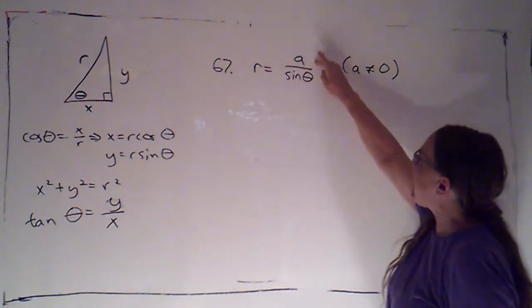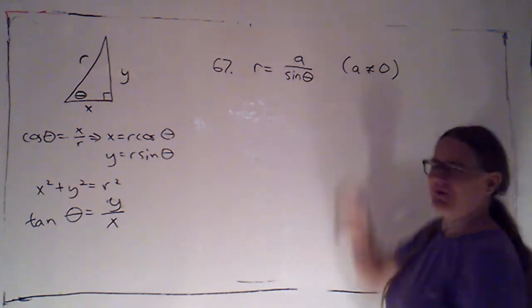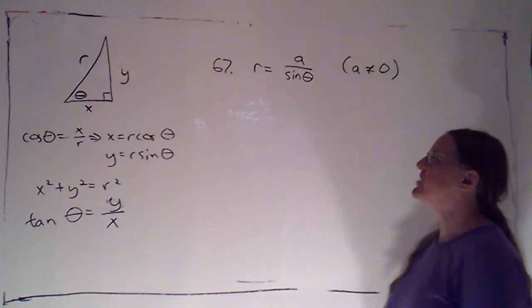We've got r is a over sine theta, where we're told that a is not zero, because if a was zero that would just be r equals zero. That's really boring. It's just the origin.